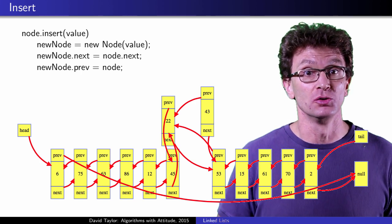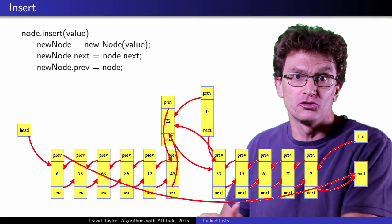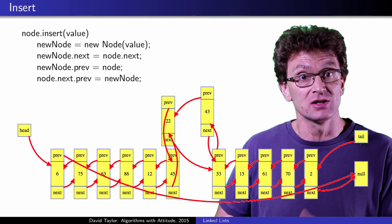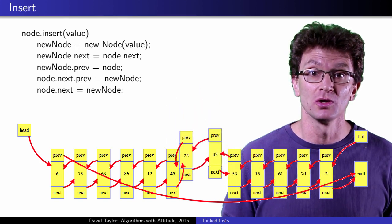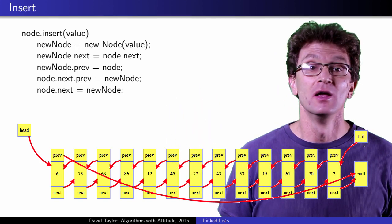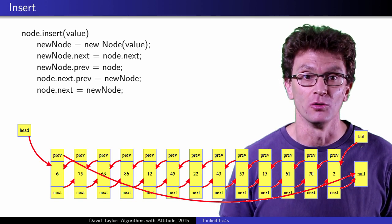After that, modify the original list to include the new node. Set both 22's next node's previous reference, and 22's next reference to the new node. When we visualize that, it looks nice and neat. Singly linked lists are the same if you ignore the references to previous nodes.